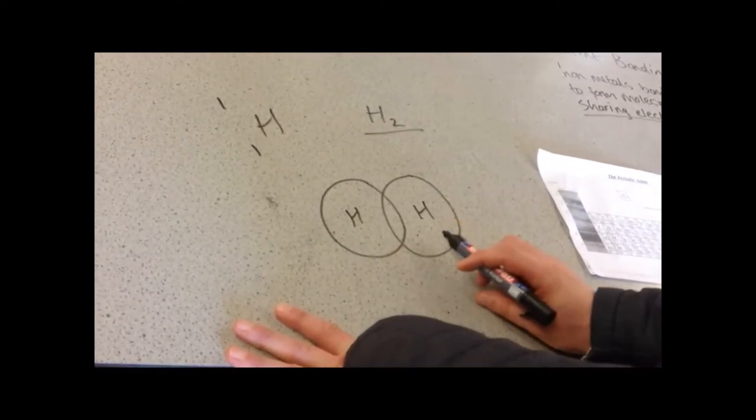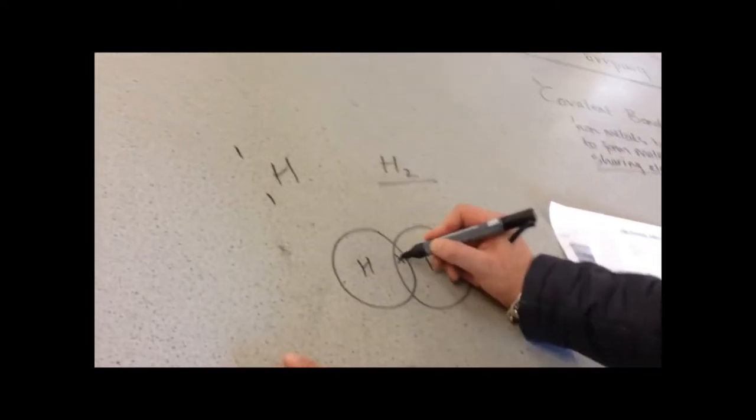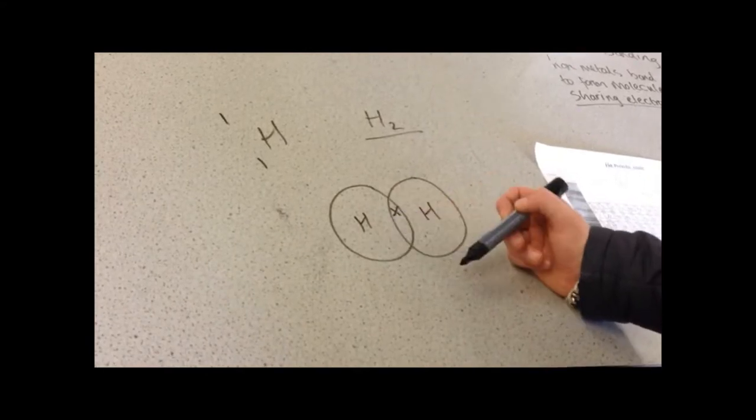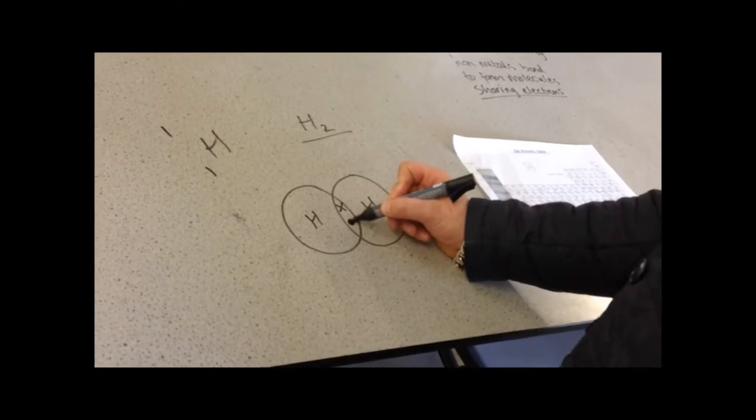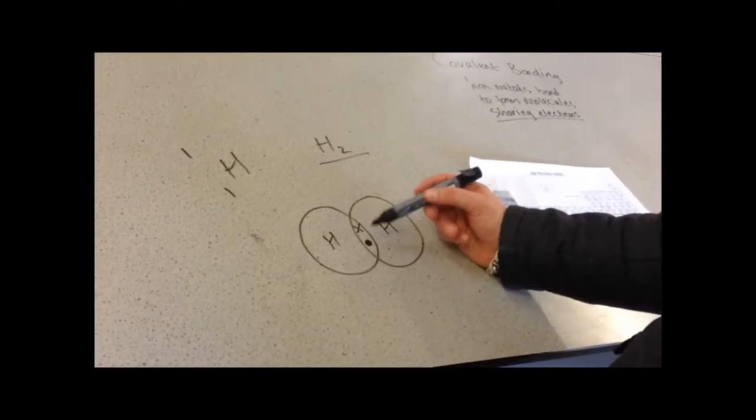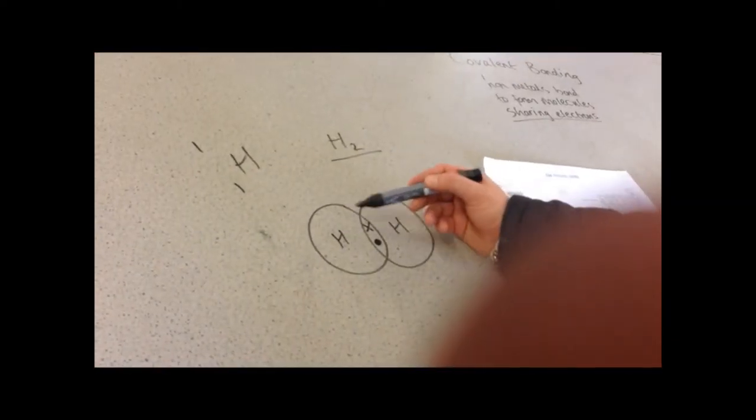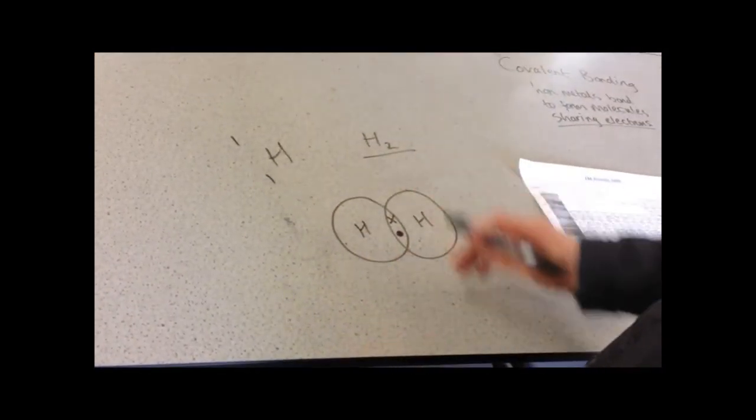If this one has one electron and is going to share it with this one, I draw it in that position. I've drawn it with a cross to show that this electron comes from that atom. The electron for this atom I'm going to draw using a circle in the middle because this atom is sharing its electron with that atom. Both atoms have access to those two electrons. When I count up the number of electrons this one has, it's two. Same with this one - two. So it's a full outer shell.